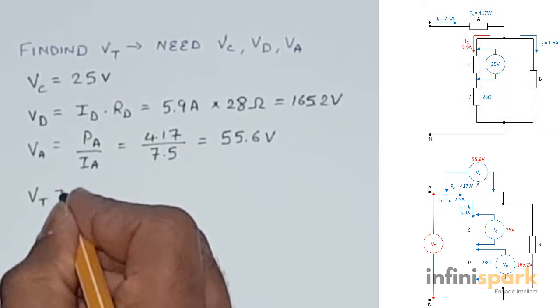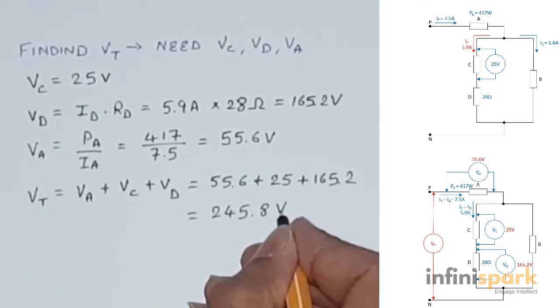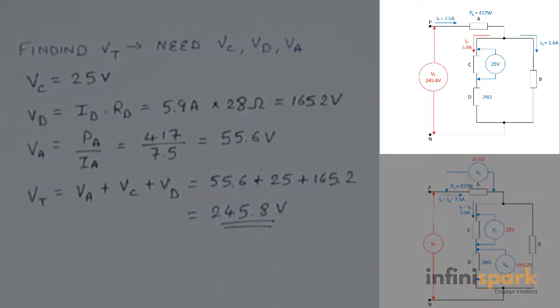Putting all three voltage drops together will give us VT, which is 245.8 volts. So the supply voltage is 245.8 volts.